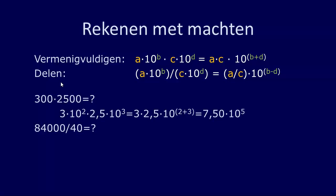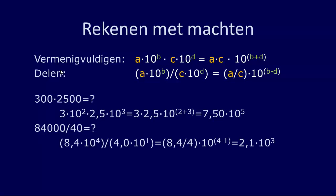Een voorbeeldje met delen: 84.000 delen door 40. In de wetenschappelijke notatie opgeschreven wordt dat 8,4 maal 10 tot de macht 4, delen door 4,0 maal 10 tot de macht 1. Dan zet je eerst 8,4 delen door 4, dus 2,1. En de machten worden 10 tot de macht 4 min 1, oftewel 10 tot de macht 3.